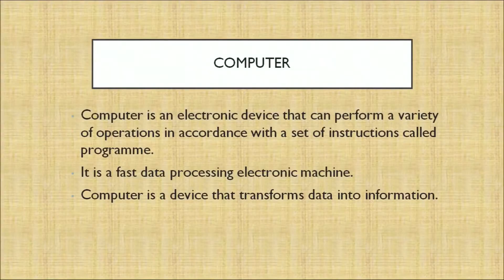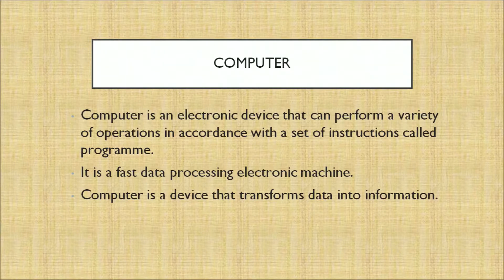What is a computer? All of us know about computers today. Every one of us is using a computer or a laptop. A computer is an electronic device that can perform a variety of operations in accordance with a set of instructions called a program. It is a fast data processing electronic machine. A computer is a device that transforms data into information. We will discuss in detail how this computer has helped us with respect to the accounting processes.